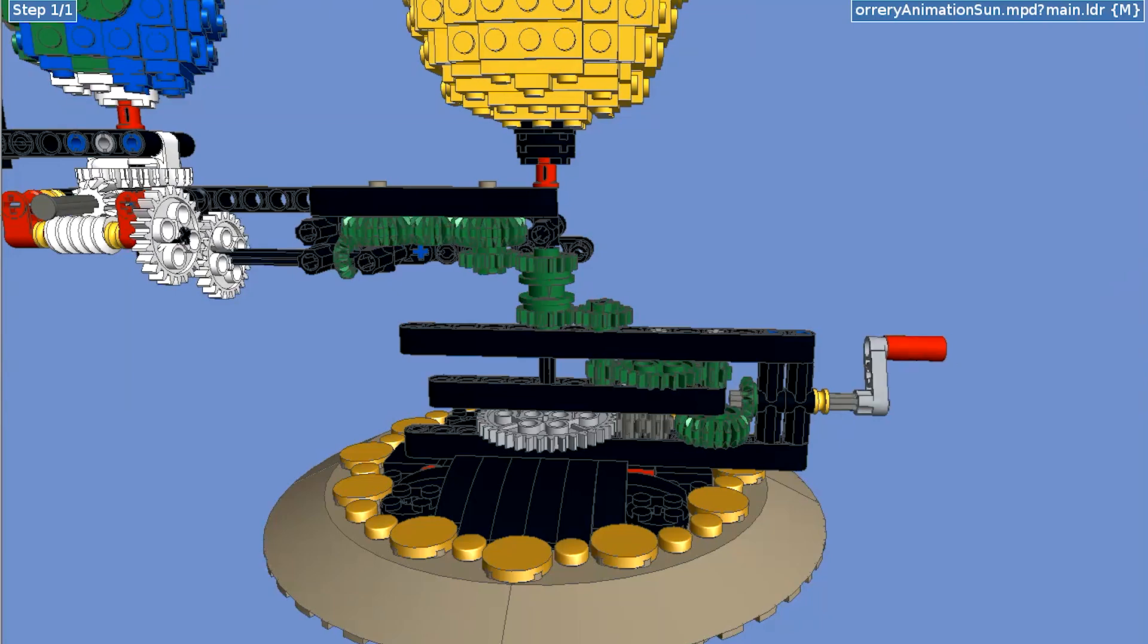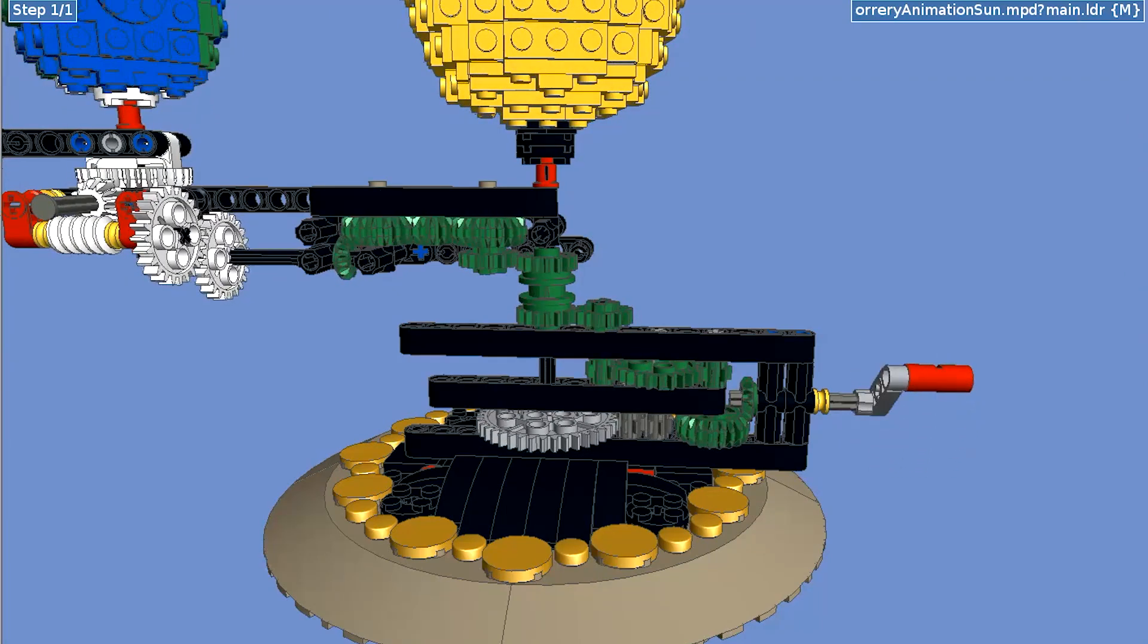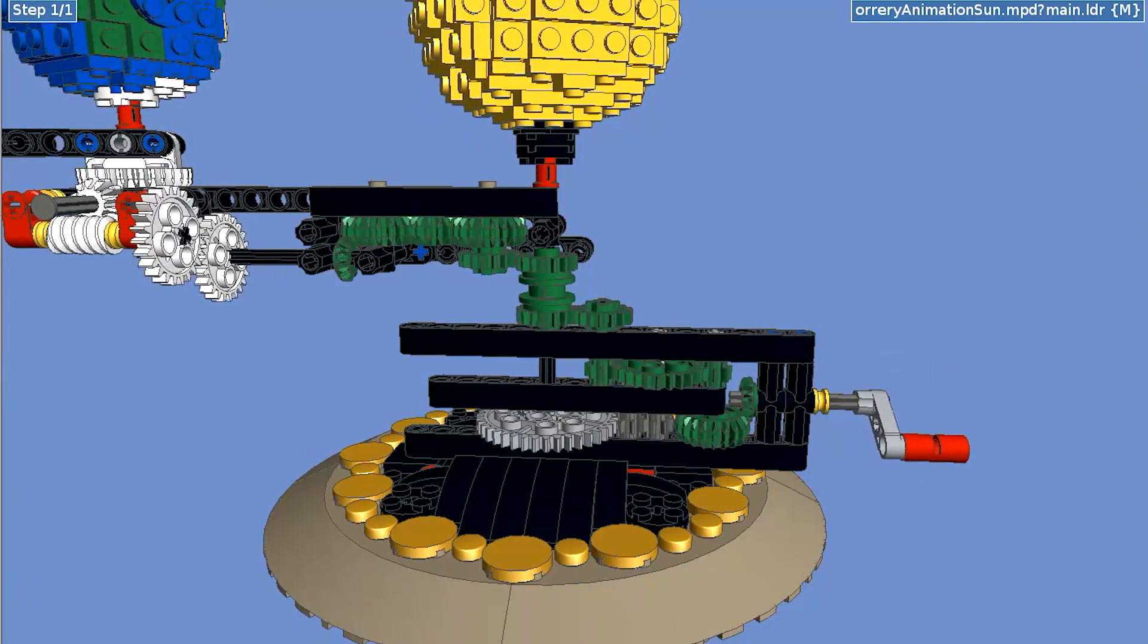Next up we have the sun, and as you can see, there are only a few additional gears used to rotate it that come off pretty early on in the main gear train.